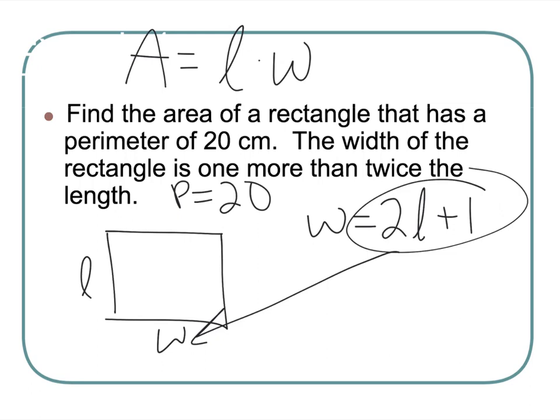Well, what do I know? I do know that my perimeter is 20, and I know my perimeter is equal to all my sides added up, so I could say 20 is equal to L, right, plus L, and this guy is 2L plus 1, and this is 2L plus 1.